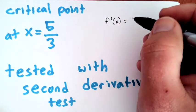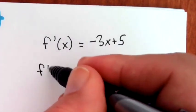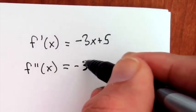Remember, my first derivative was equal to -3x + 5. And my second derivative, then, is equal to -3.